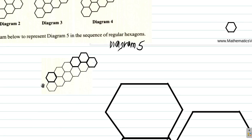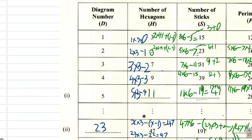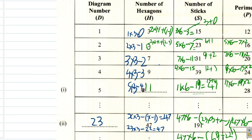In diagram 5, we have 1, 2, 3, 4, 5, 6, 7, 8, 9, 10, 11 hexagons. So that's 11. We have 11 hexagons, so that's the value 11 right here.